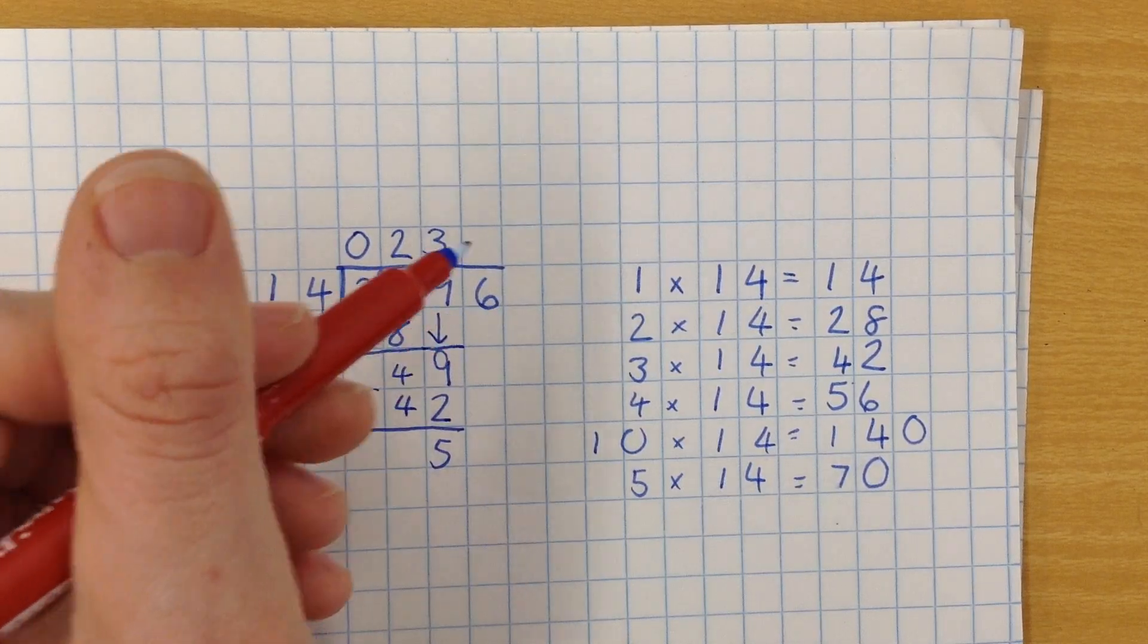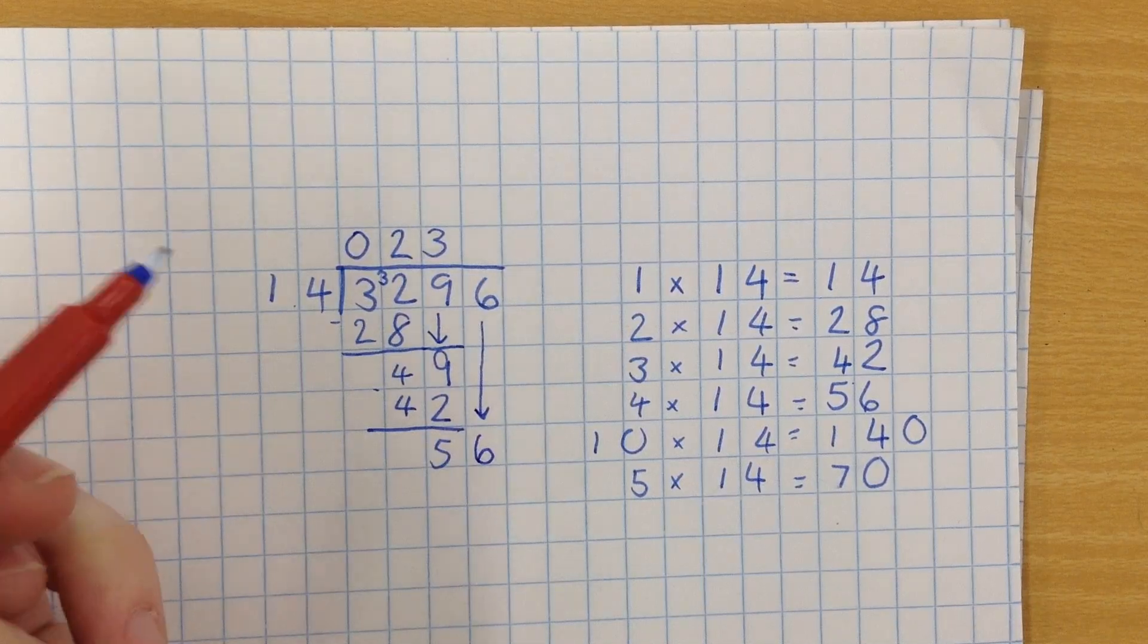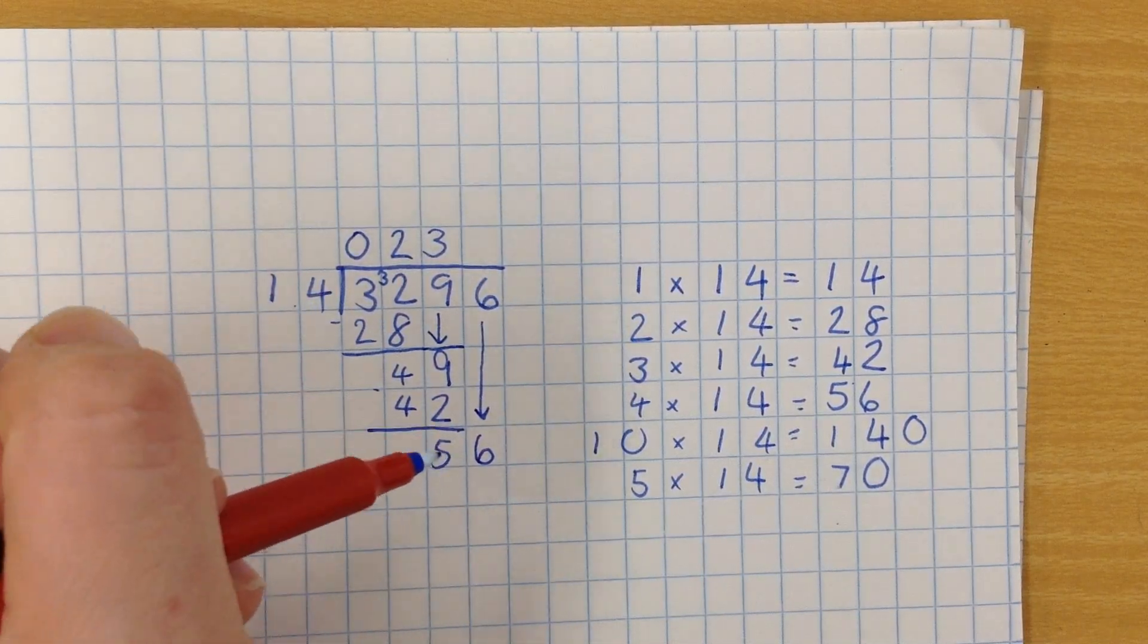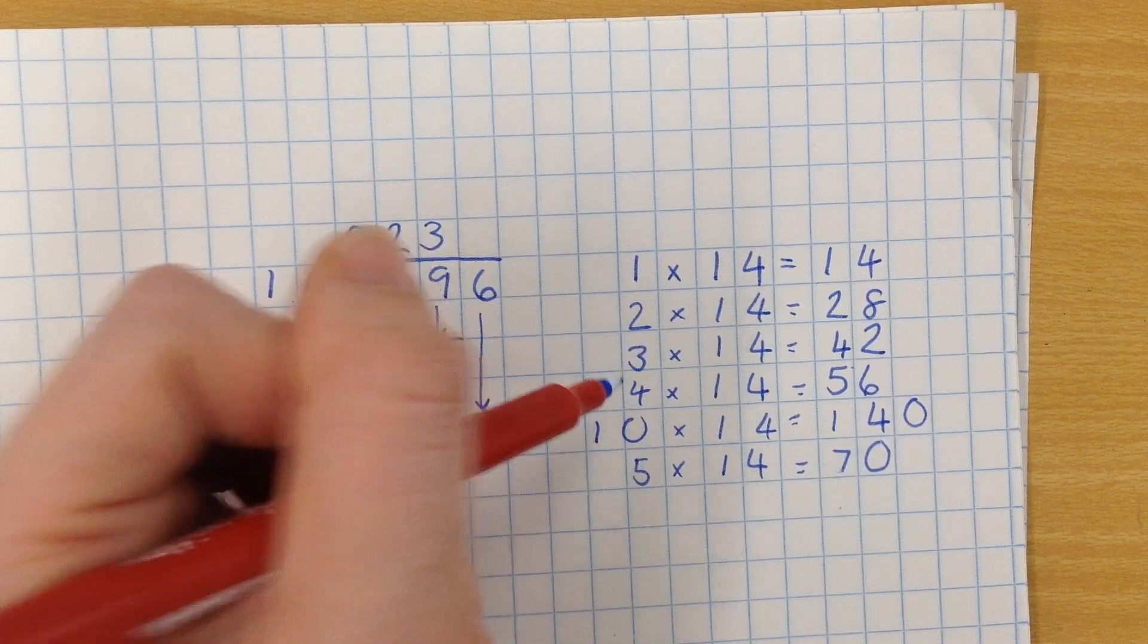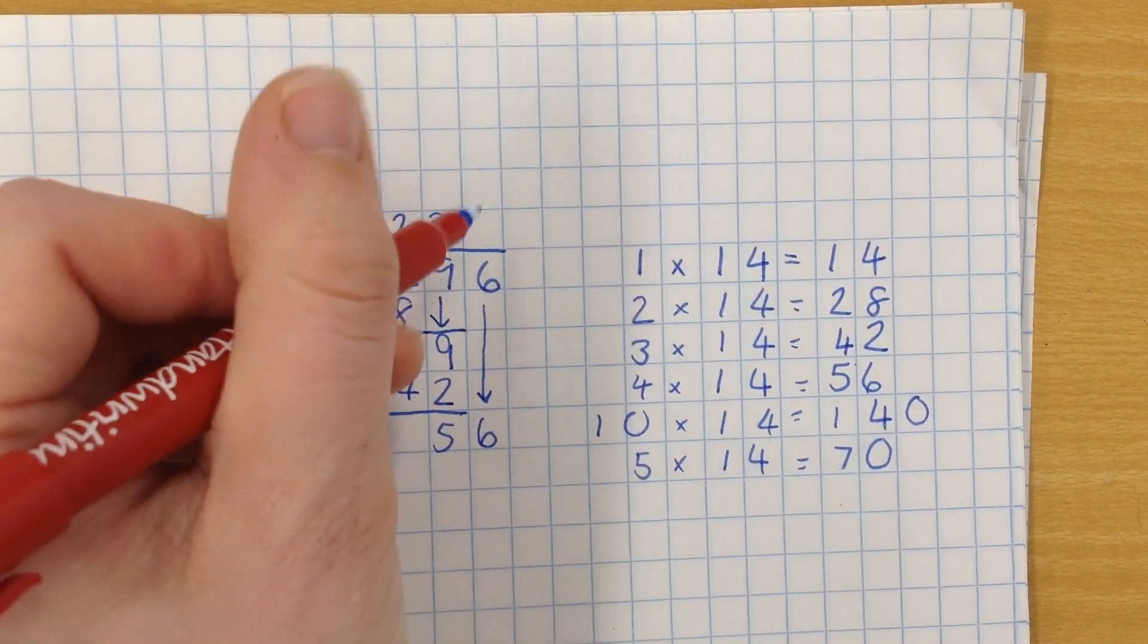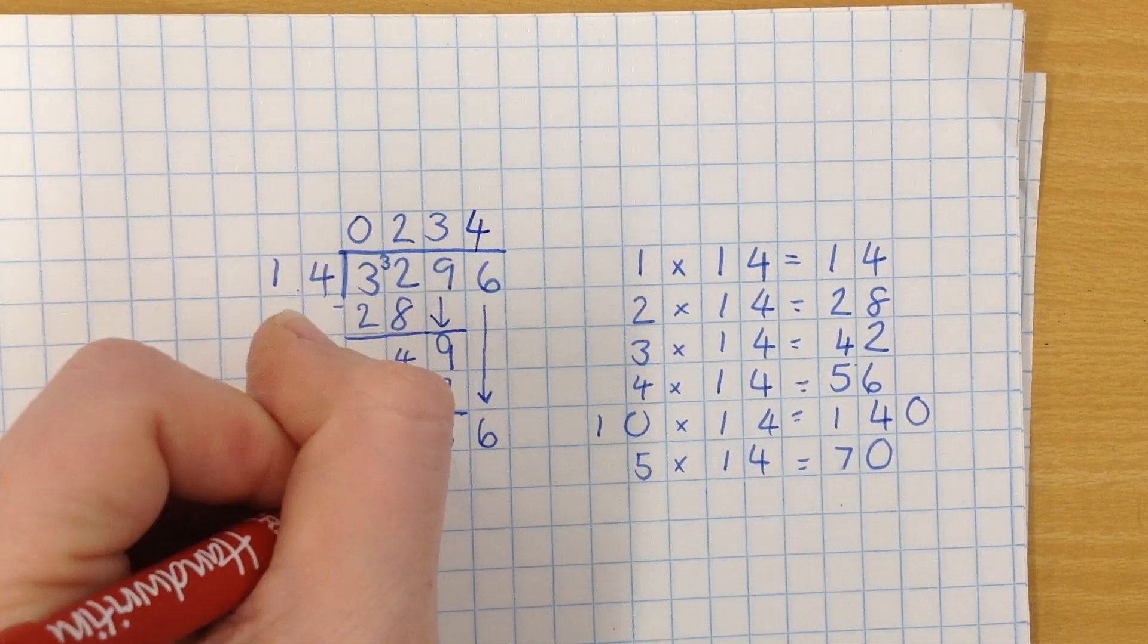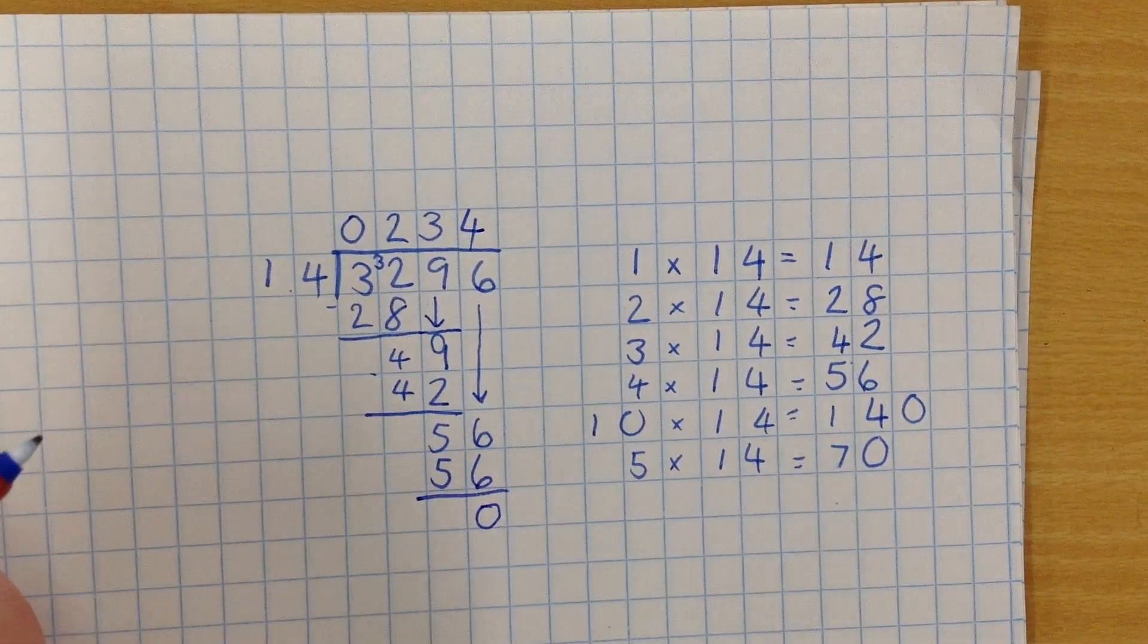And I still need to work out what to do with that 6. I'm going to go, and it's down there. How many times does 14 go into 56? Luckily for me, this actually works out perfectly. So 14 goes into 56 four times. There's my answer, and I'm just going to prove my point by finishing it off really nicely.